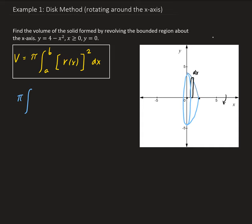The upper bound is going to be at this point here, which is the x-intercept of our function, on the right side of the y-axis. So this is going to be at 2. So our bounds are going to go from 0 to 2.